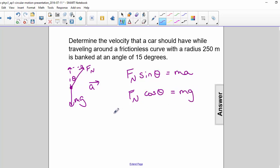A great trick that you can do with algebra is divide one equation by the other. So we cancel out our fn's and our m's. Sine over cosine is equal to tangent. So the tangent of theta is equal to a over g.